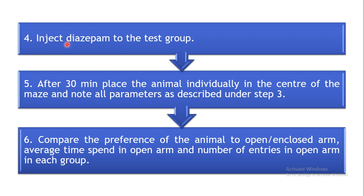The next step is to inject diazepam to the test group. Wait 30 minutes to allow the drug to act, and after 30 minutes place all the animals of the test group individually at the centre of the maze. Note all the same parameters as before and compare the preference of the animal to the open and enclosed arm — the average time spent in the open arm and the number of entries in the open arm — for both the control and test groups.